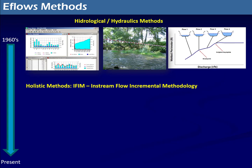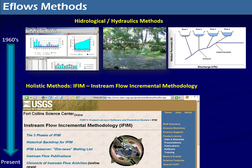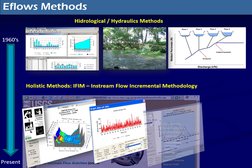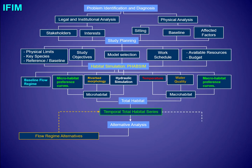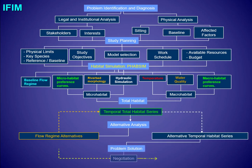The most used methodology of this type in the world is the Instream Flow Incremental Methodology, known by the acronym IFIM. IFIM is considered a standard of best practices in this field by the International Bank and the Academy. This methodology has the ability to integrate the results of complementary models such as hydraulic, physical habitat, hydrology, population dynamics, water quality, temperature, oxygen, and others. IFIM is a complete process that involves social analysis, hydrology, hydraulics, biology, and a final decision-making process.